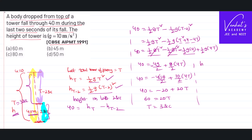Now finding the total height is an easy task. It is freely falling, so H equals half G T squared. With G equal to 10 and T squared equal to 9, we get half times 10 times 9, which is 90 by 2, that is equal to 45 meters. That is the answer for the problem.